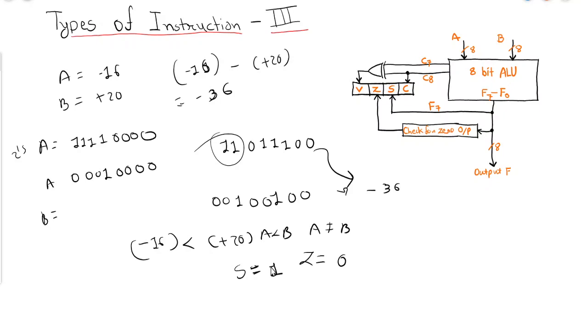We can say that A is smaller because we are getting a negative answer. So A is smaller and B is larger. In that case, branch if less than and branch if not equal will take place.